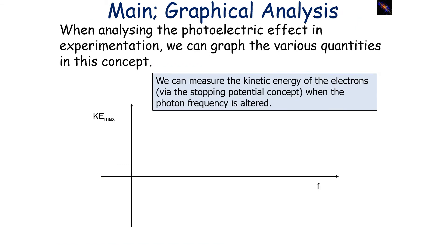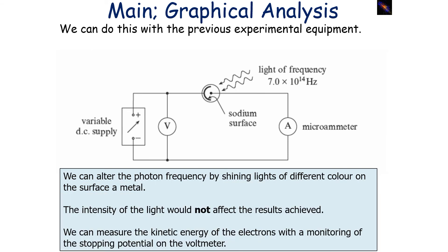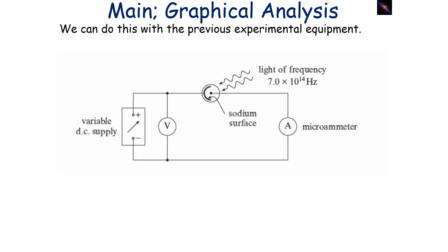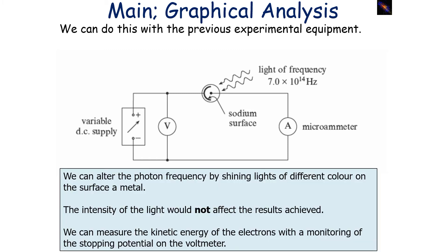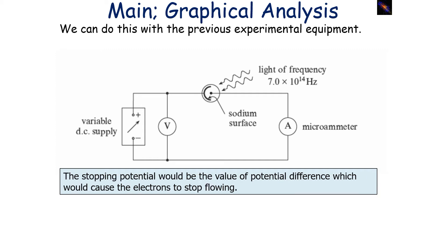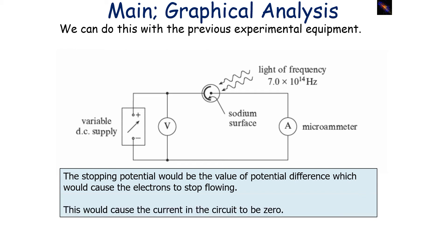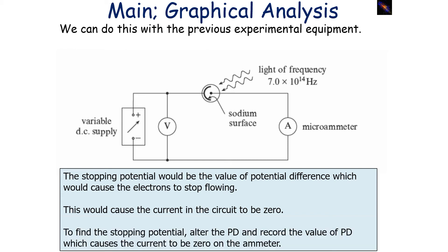When analysing the photoelectric effect experimentally, we can graph the various quantities. We measure the kinetic energy of electrons via the stopping potential when the photon frequency is altered, using the following apparatus: a variable DC supply, the metal surface with the frequency of light hitting upon it, a voltmeter, and an ammeter. We can alter the photon frequency by shining lights of different colours on the metal surface — the intensity of the light does not affect the results. The stopping potential is the value of potential difference which causes the electrons to stop flowing, making the current in the circuit zero. To find it, you alter the PD and record the value which causes the ammeter to read zero.